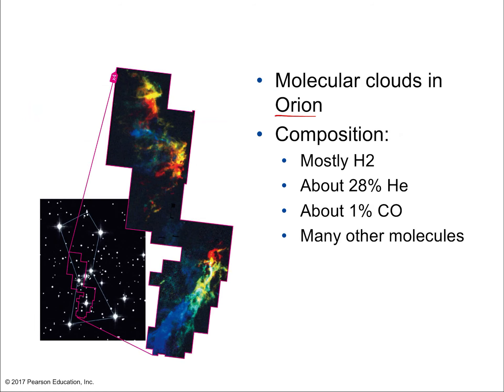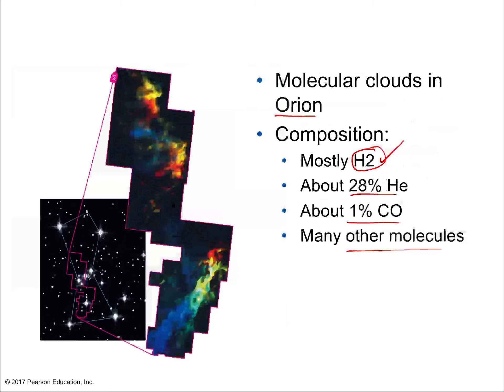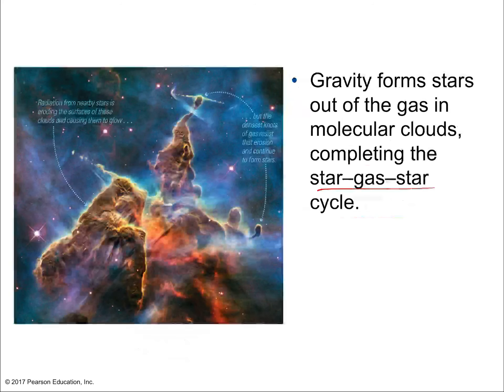Molecular clouds — like those shown in the Orion constellation — are mostly diatomic hydrogen, with the universe being mostly hydrogen, about 28% helium, and about 1% carbon monoxide plus many other molecules. Carbon monoxide is important because it emits light very effectively, allowing thermal energy to leave the cloud and enabling gravity to collapse the cloud into higher and higher density, eventually forming a protostar that starts fusion. This completes the star-gas-star cycle.